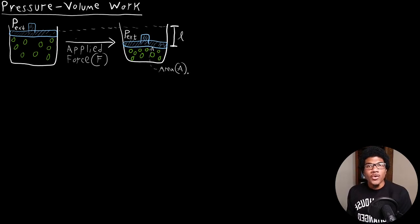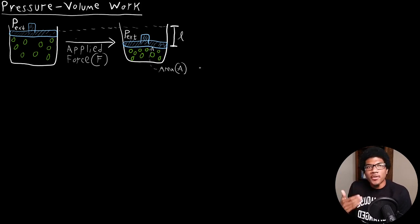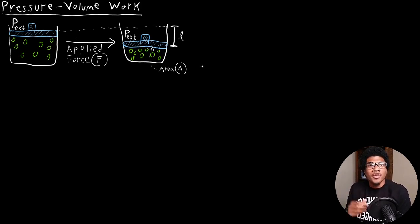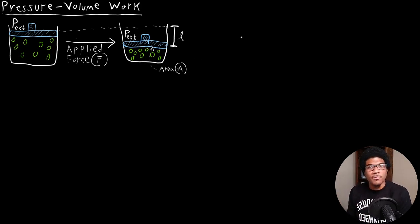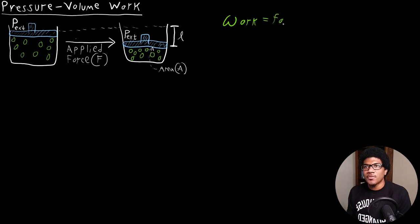In this video, we're going to look at pressure volume work. Before we look at that specifically, let's talk about what work is in general. In general, work is any sort of motion that's achieved against some sort of opposing force. Our usual mathematical equation that defines this is: work is equal to force times the distance.